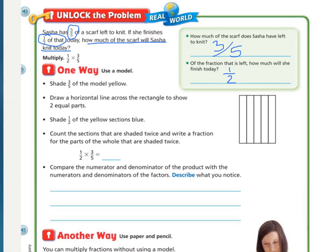One way to solve this is to use our model. You can use two different colors, or you can use a lighter shade of pencil, and then the second round, you use a darker shade of pencil. For this first one, shade three-fifths of the model yellow. Right here, I shaded in three of the five columns made in this rectangle.